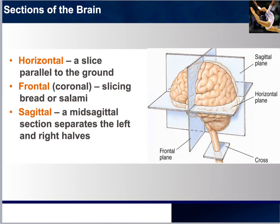If you've ever seen an autopsy, either through your work or through a video, you would know that a thorough autopsy often requires the slicing of an organ considered critical or to have played a role in the death of the individual. Looking at the brain, slicing it in specific ways would reveal damage in different parts, depending on how we slice it. In the next few slides, you'll see drawings of sections or slices of the brain cut from one of three different planes.